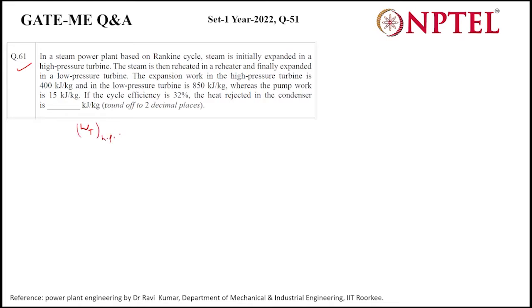Expansion work in the high pressure turbine is 400 kilojoules per kg, and work done in the low pressure turbine is 850 kilojoules per kg.